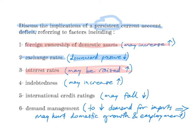If they raise interest rates, this makes it more difficult for domestic investors to borrow money and invest. At the same time, a persistent current account deficit leads to an increase in indebtedness. It may increase the country's indebtedness because if the country is borrowing a lot from foreign banks and foreign markets in order to finance its persistent deficit, its level of indebtedness will increase, which may influence its international credit ratings — the country's creditworthiness and ability to pay back loans. If the country is borrowing so much from foreign countries, its international credit ratings may fall.